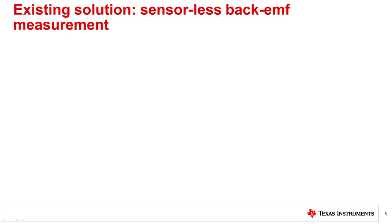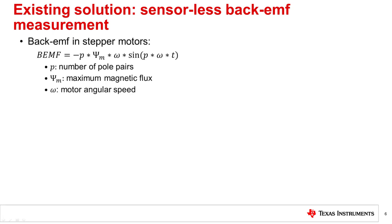The back EMF is the voltage induced by the rotor's magnetic field moving past the stator coils. The back EMF in a stepper motor can be expressed as the following expression, where P is the number of pole pairs, ψm is the motor's maximum magnetic flux, and ω is the motor's angular speed. P and ψm will be constants specific to each motor. Therefore, the back EMF will be sinusoidal in nature and directly proportional to the motor speed.